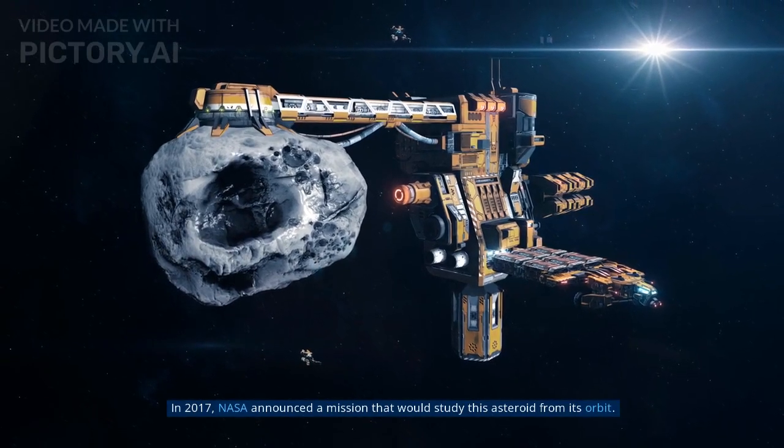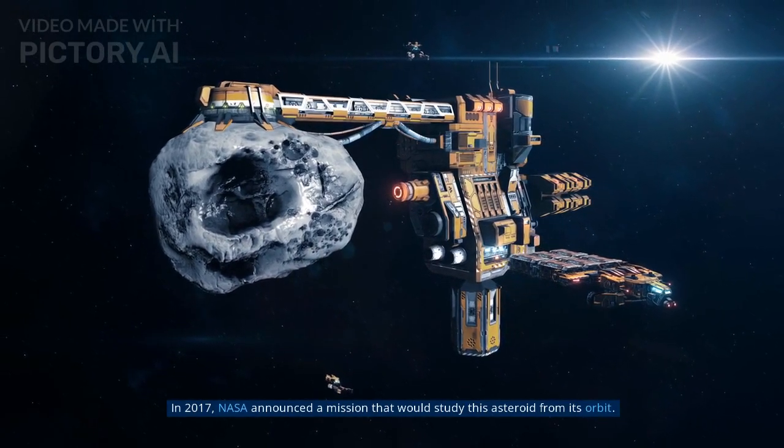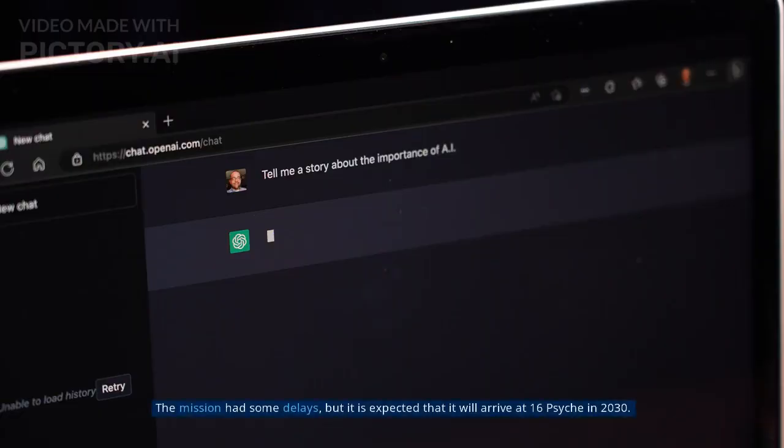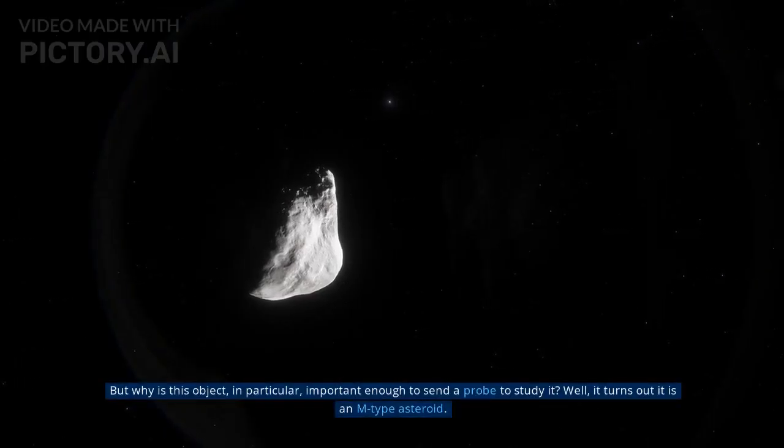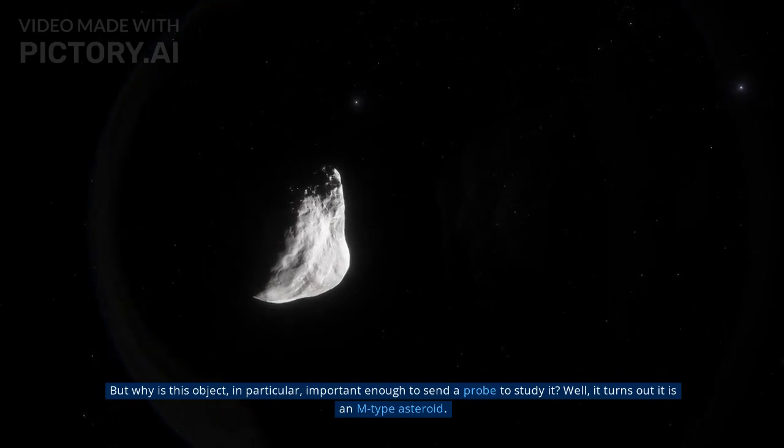In 2017, NASA announced a mission that would study this asteroid from its orbit. The mission had some delays, but it is expected that it will arrive at 16 Psyche in 2030. But why is this object, in particular, important enough to send a probe to study it?